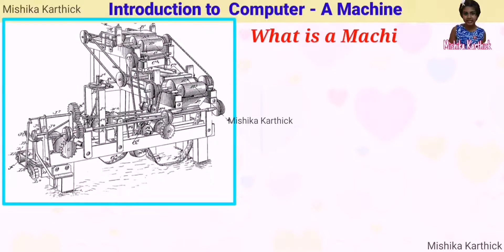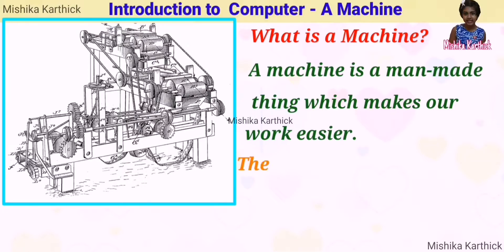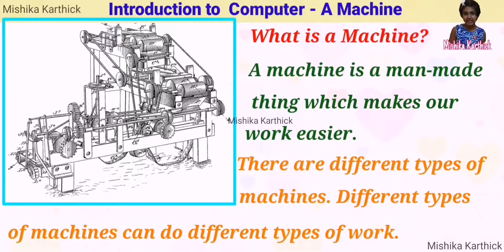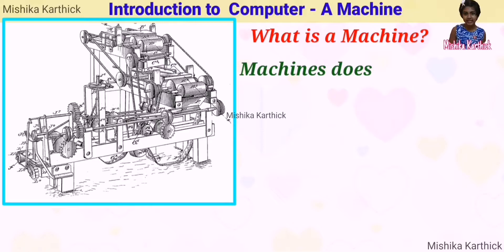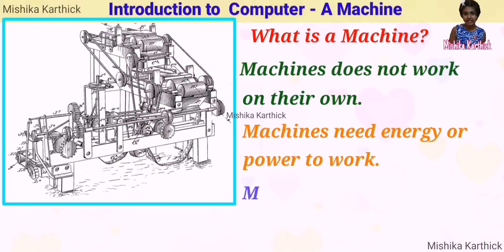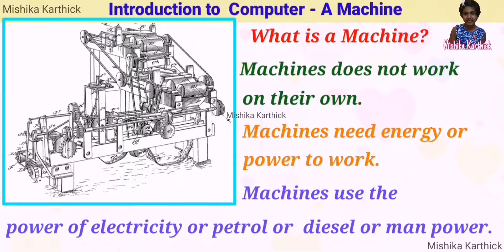What is a machine? A machine is a man-made thing which makes our work easier. There are different types of machines, and different types of machines can do different types of work. A machine does not work on its own. Machines need energy or power to work. Machines use the power of electricity, petrol, diesel, or manpower.